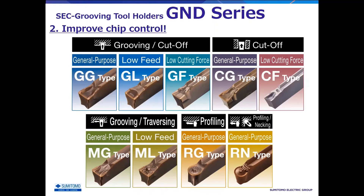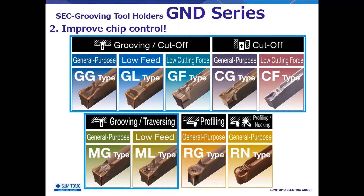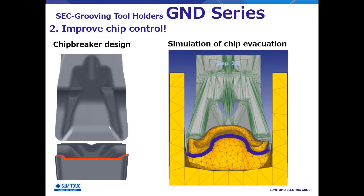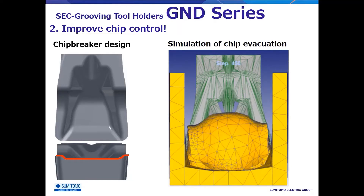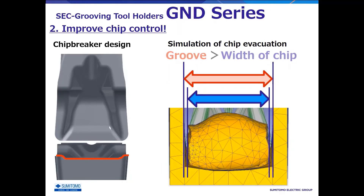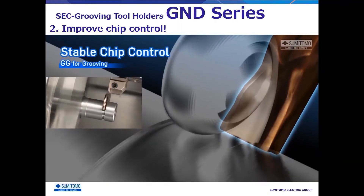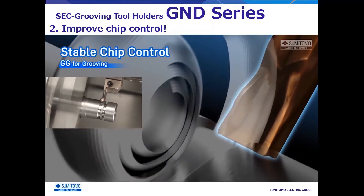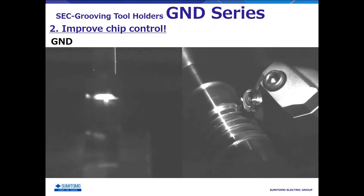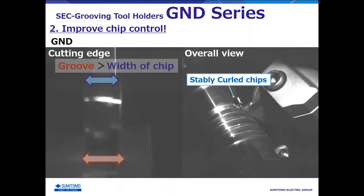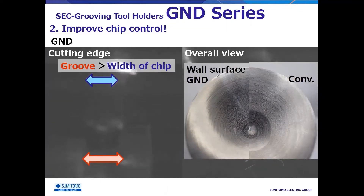There are nine types of three-dimensional chip breakers in the GND series, and all cutting edges for grooving and cutoff have a concave shape at the center. This cutting edge design has the effect of bending chips. Bending the chips allows the width of chips to be thinner than the groove width so that chips can be evacuated easily. In addition, the chip breaker can stabilize the chip curve. Looking at the cutting edge during cutting with a high-speed camera, GND stabilizes chip control, suppresses chip contact with the machined surface, and reduces scratches.